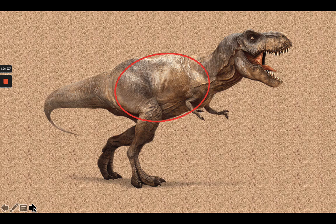For T-Rex and any other dinosaur that stands on its back two legs, we also start with an oval. T-Rex has little arms that come out from the chest area, then we add the head at the front, the tail in the back, and two legs. For T-Rex, the oval is tilted so the front part near the head is higher than the back part of the oval, because T-Rex's head is a little bit higher than his back.